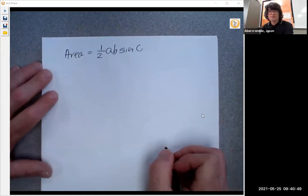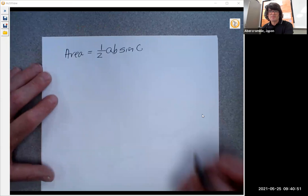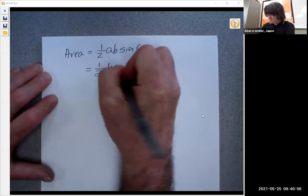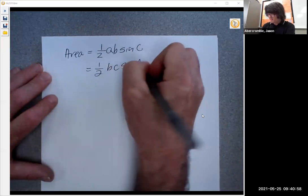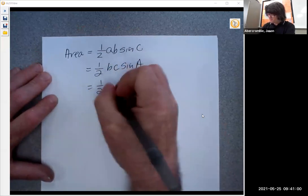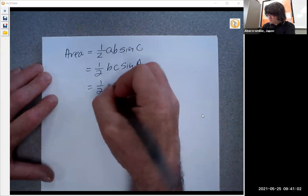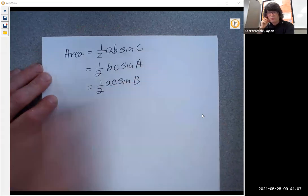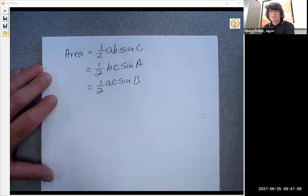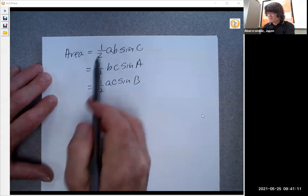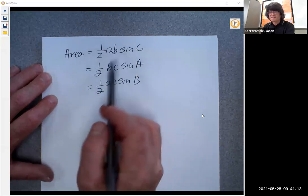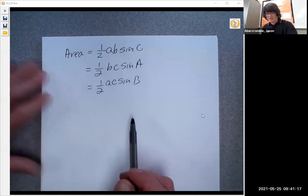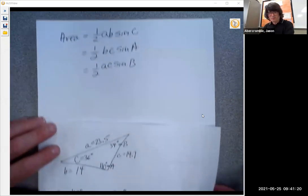So the area is one half a times b times sine C, or one half b times c sine A, or one half a times c sine B. So it's easy to remember because A, B, and C all have to be in there somewhere. If a and b are here that's angle C. If b and c are here that's angle A. If a and c are here that's angle B. So for us we've got this triangle.